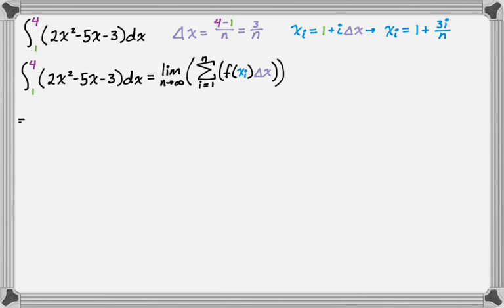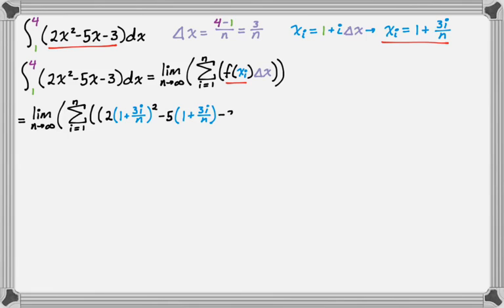Now we have to just do the problem. We need to deal with f(x sub i). f(x) is the integrand, 2x² - 5x - 3. We replace every x with one plus 3i/n. It's a lot of writing, so it's going to be 2 times the quantity x sub i squared, minus 5 times the quantity x sub i, and then minus 3. That's f(x sub i), and then we multiply that by delta x, which is 3/n. Close the summation, close the limit.